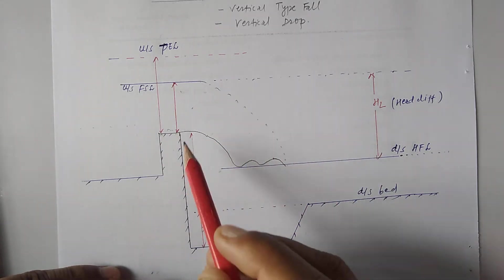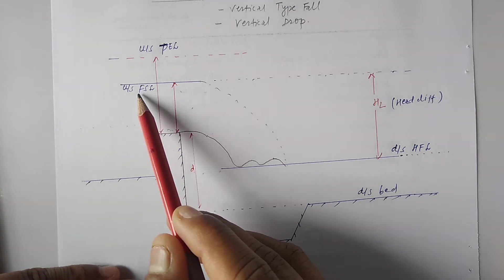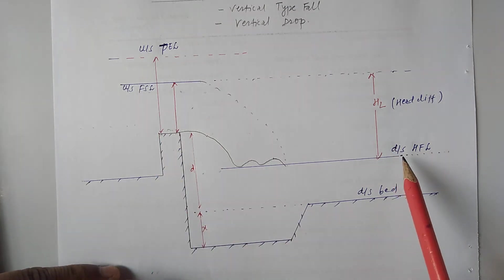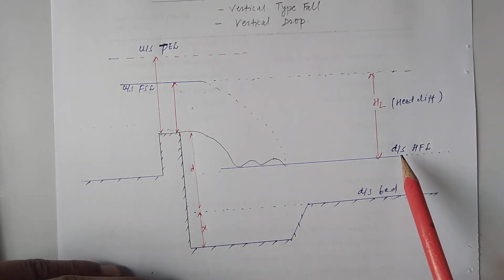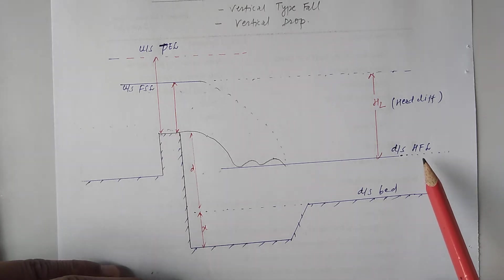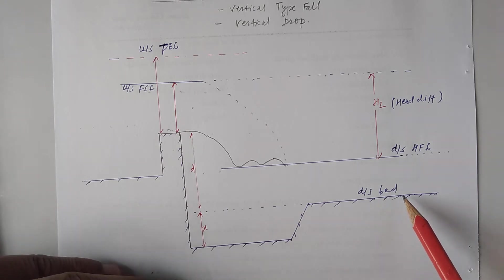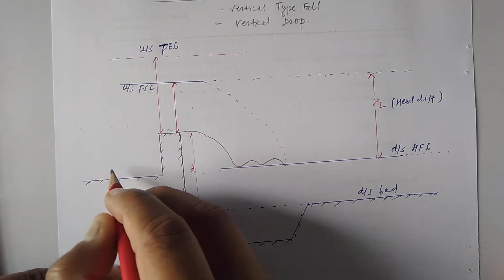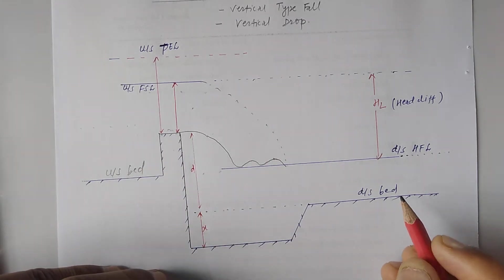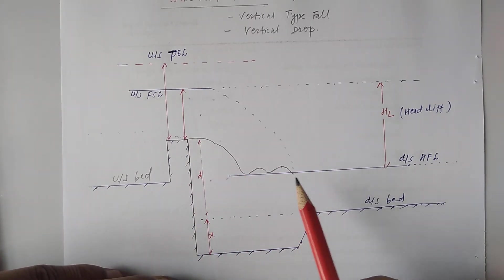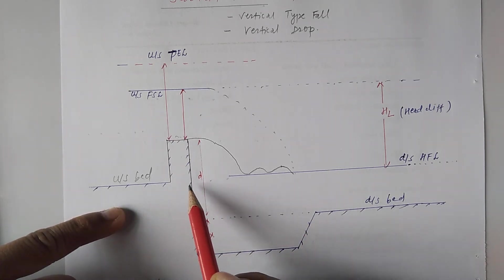There are different terminologies to know. HL means the head difference — the difference between the upstream FSL (full supply level) and the downstream HFL (high flood level). Note that HFL is equal to the full supply level — both are the same. We also have upstream bed and downstream bed, with a level difference between them.